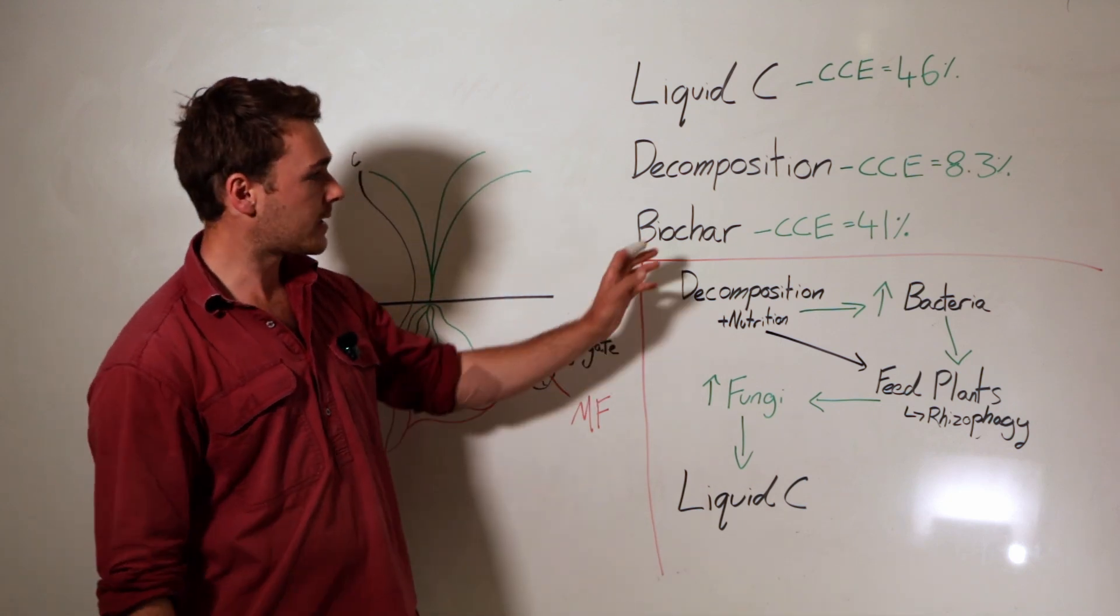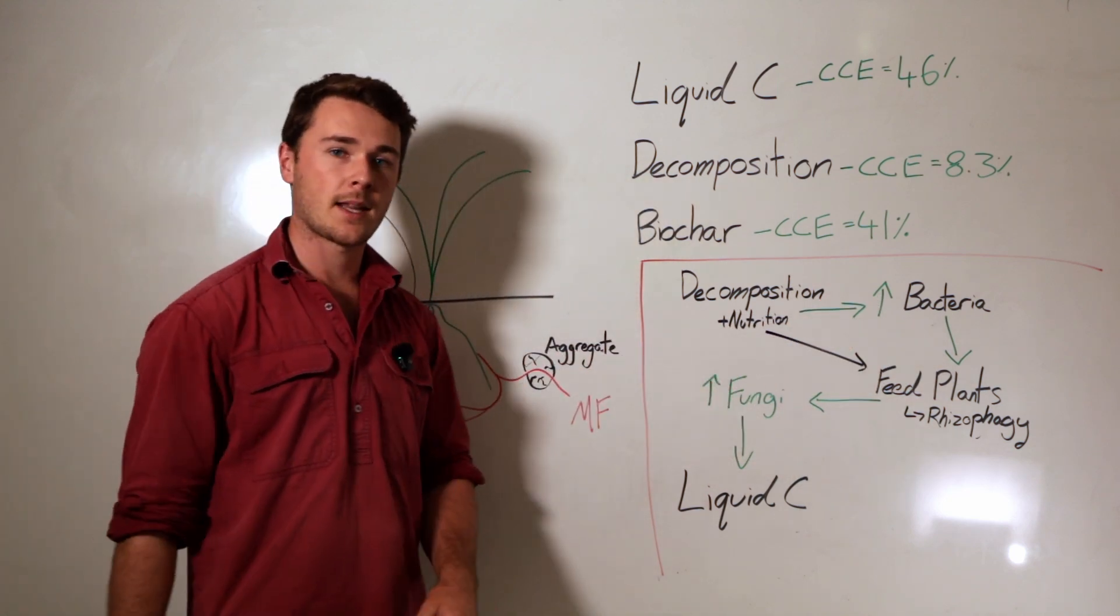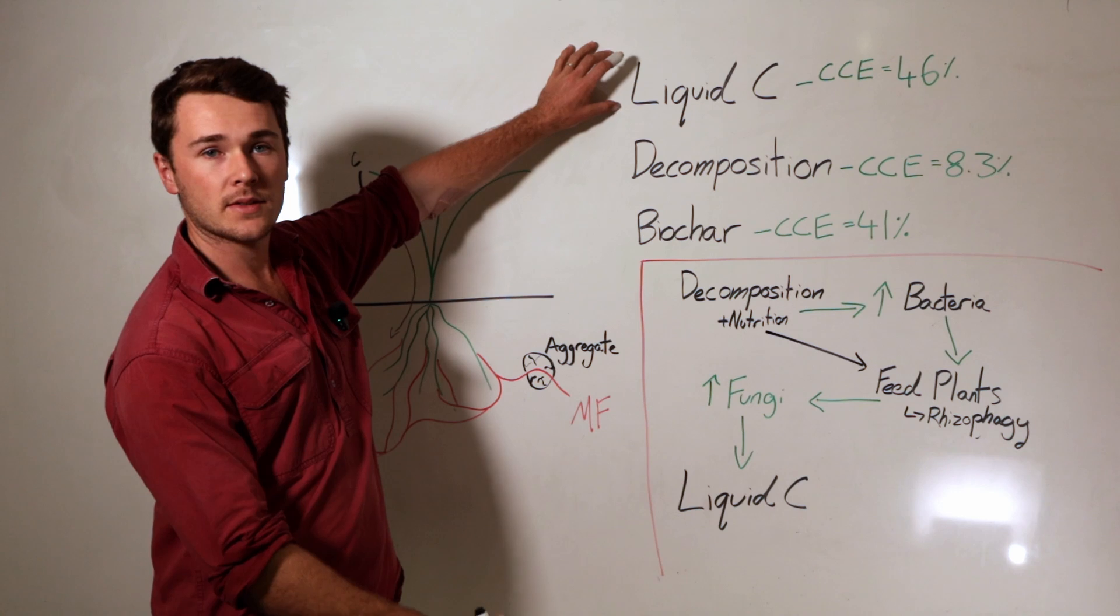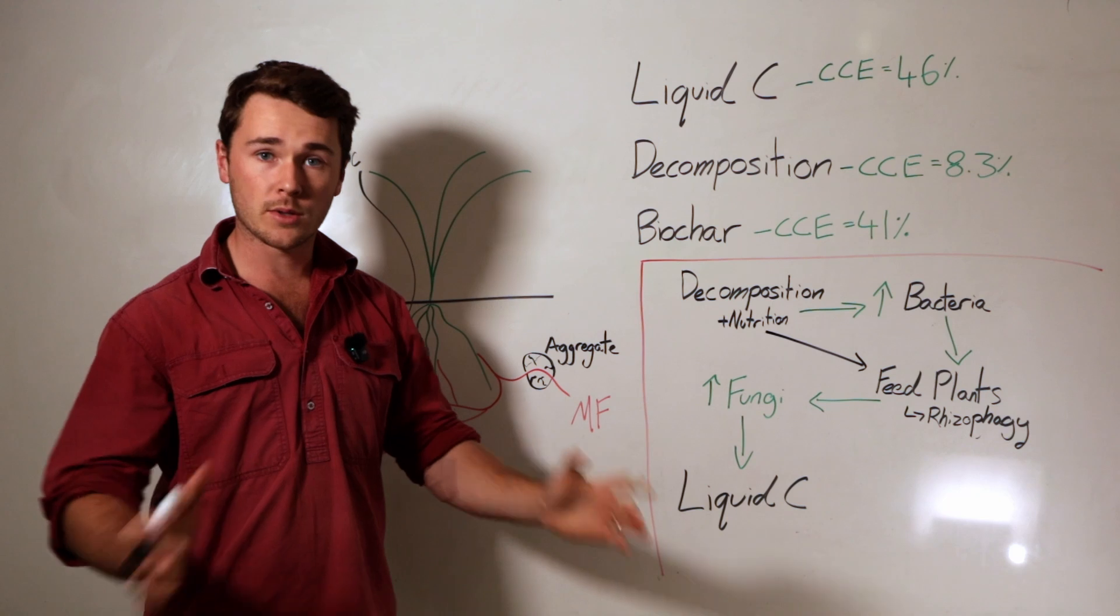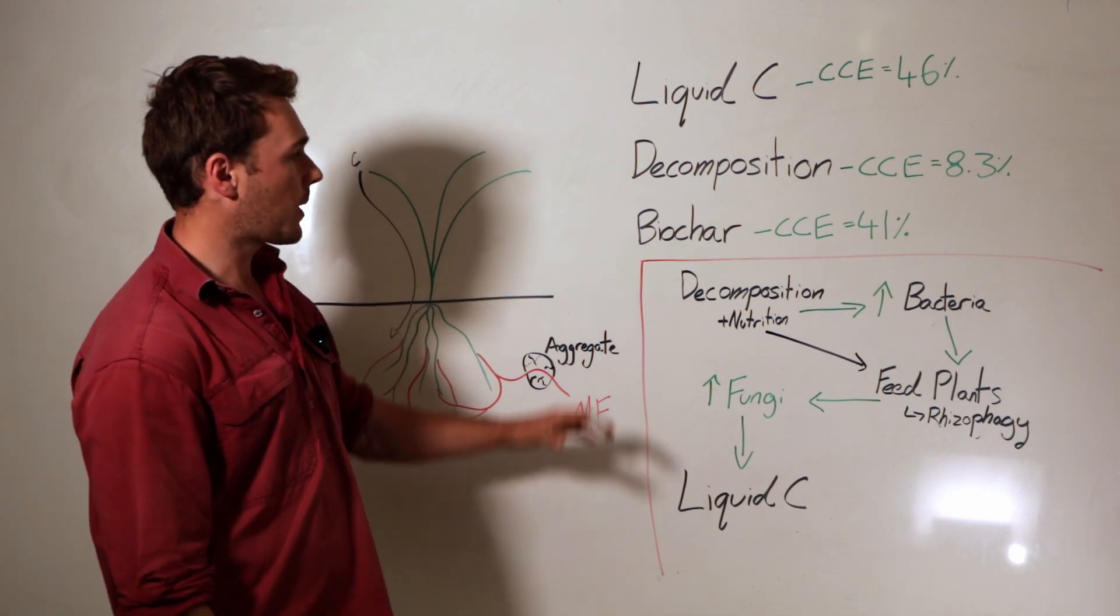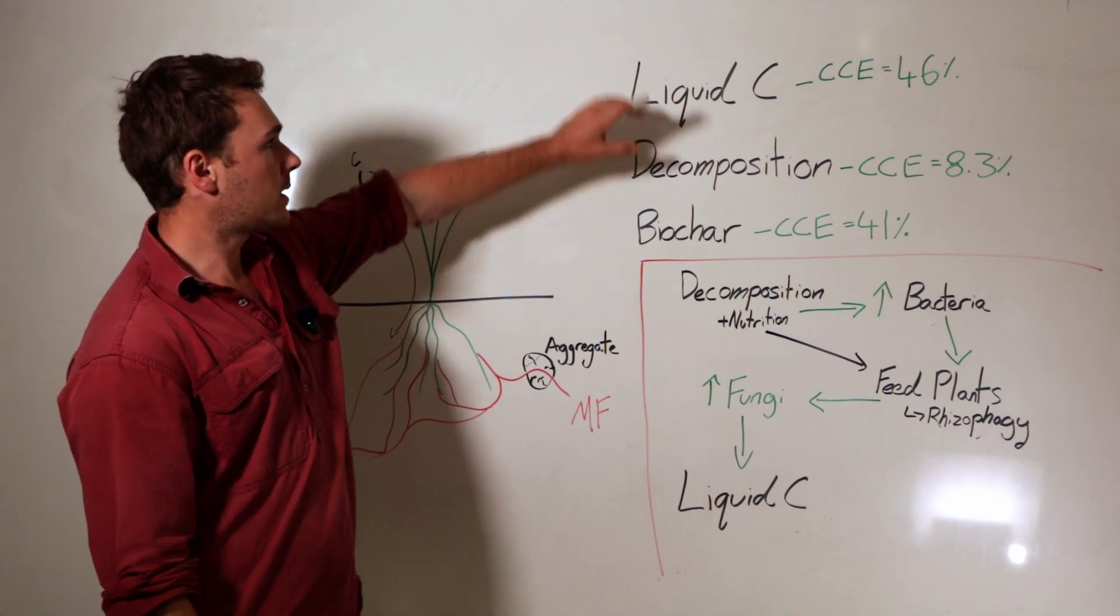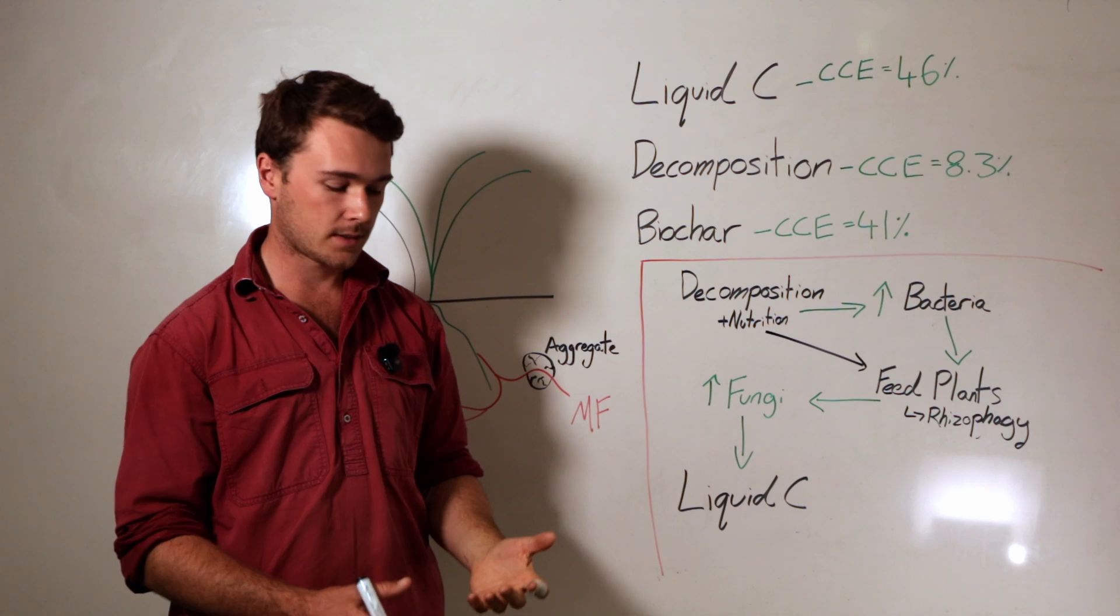In terms of comparison between each of the pathways, we really want to be focusing on building soil organic carbon with the liquid carbon pathway—it's the most efficient. We can do it on scale with a cover crop or even within our own crops given that we have these other things. This builds soil organic carbon if we want to reap all those benefits like increasing water holding capacity, increasing CEC to some extent, increasing aggregation.